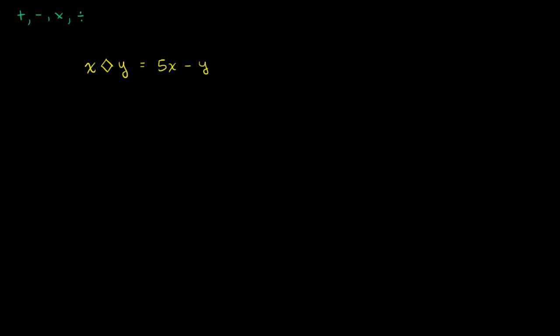So given that definition, what would 7 diamond 11 be? Well, you just go to the definition. 7 diamond 11, instead of an x we have a 7, so it's going to be 5 times 7 minus, instead of a y, we have an 11.